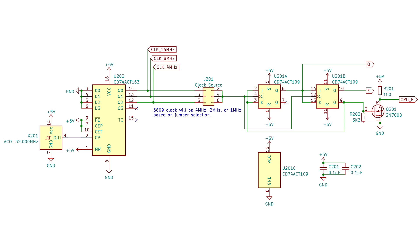A jumper block selects which output from the counter to use to drive a 74ACT-109 JK flip-flop pair that generates E and Q. Note that the 74-109 is a little different than the 74-76 in the datasheet example — the K input is inverted, so the circuit has been adapted to compensate. 74ACT parts were chosen because 32MHz is well within their speed rating, and they have a pretty strong output drive, so I don't anticipate needing to buffer the clock signals at all.